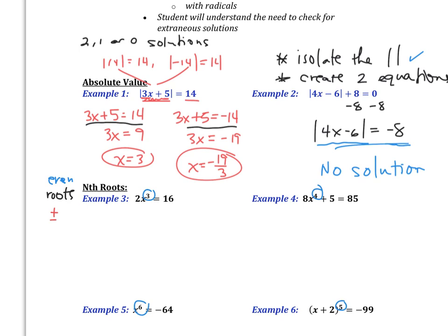On this one, first I'm going to divide by 2 to get x by itself, and I get x cubed is equal to 8. Then I'm going to take the cube root of both sides, and x is equal to 2. Since the cube root is not even, I don't do plus or minus here.